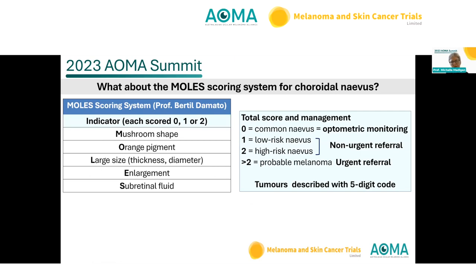A newer system is the MOLES scoring system, developed by Professor Bertil Damato in the UK, who spoke at the first AOMA Summit. It looks at indicators for risk: mushroom shape, orange pigment, large size (mostly going on diameter), whether the tumour has enlarged over time, and whether there is subretinal fluid. It can be remembered with the moles acronym and cases can be scored as common nevus monitored by an optometrist, low or high risk, or probable melanoma.